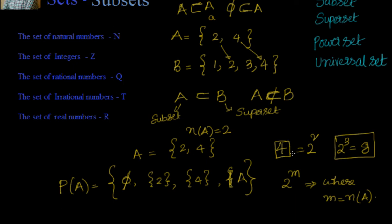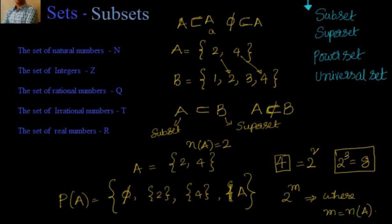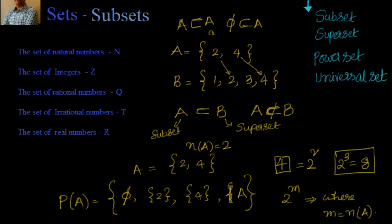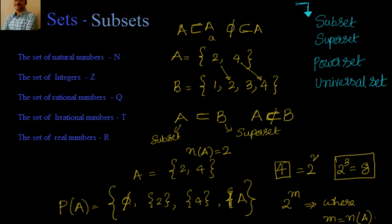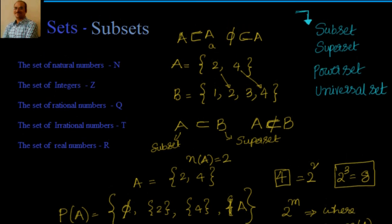So we can say that number of elements in powerset can be given by 2 to the power of M where M is the cardinality of A. So if you have 2 elements it will be 4. If you have 3 elements it will be 8. Powerset is the set of all the subsets of a particular set.